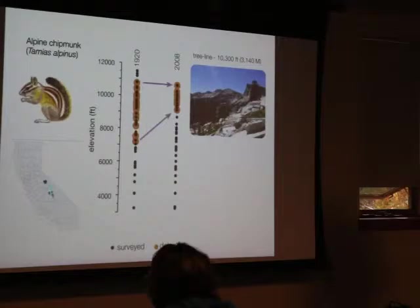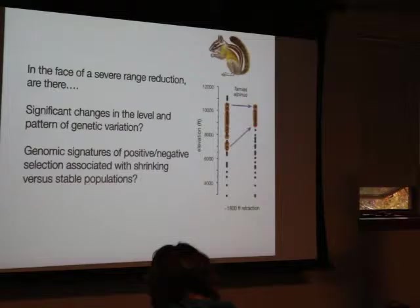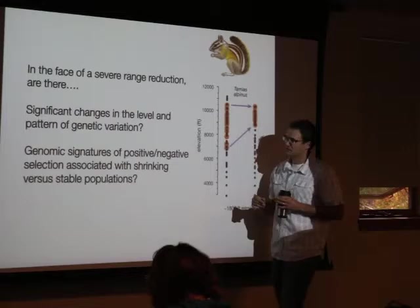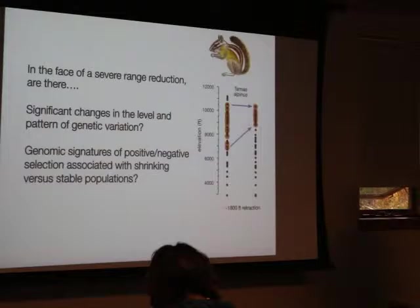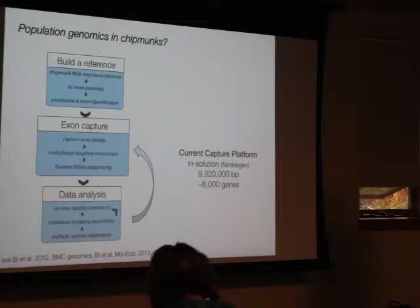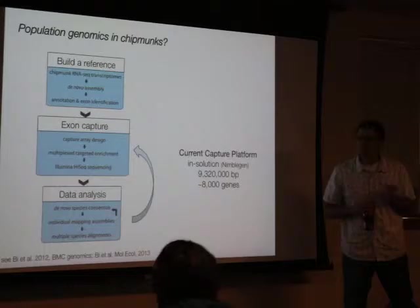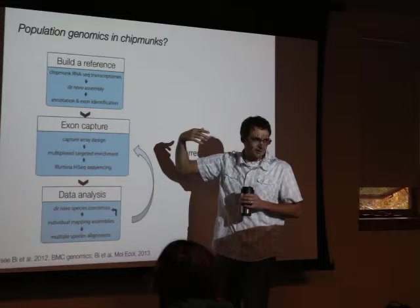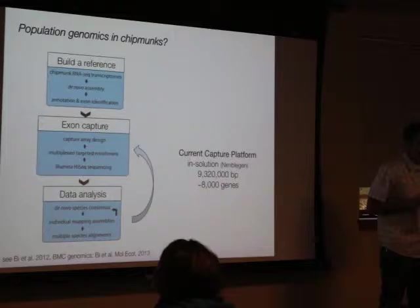In particular, Tamias alpinus, the alpine chipmunk — endemic to this region — lost a massive chunk of its range in just this hundred-year timespan. Other chipmunk species remained largely stable. In alpinus, there was a large range constriction detected by 2008 compared to historic sampling. The ecological and evolutionary question is: in the face of this severe range reduction over a very short timescale, are there significant changes in the level and pattern of genetic variation? And potentially, are there genomic signatures of positive or negative selection in shrinking versus stable populations?